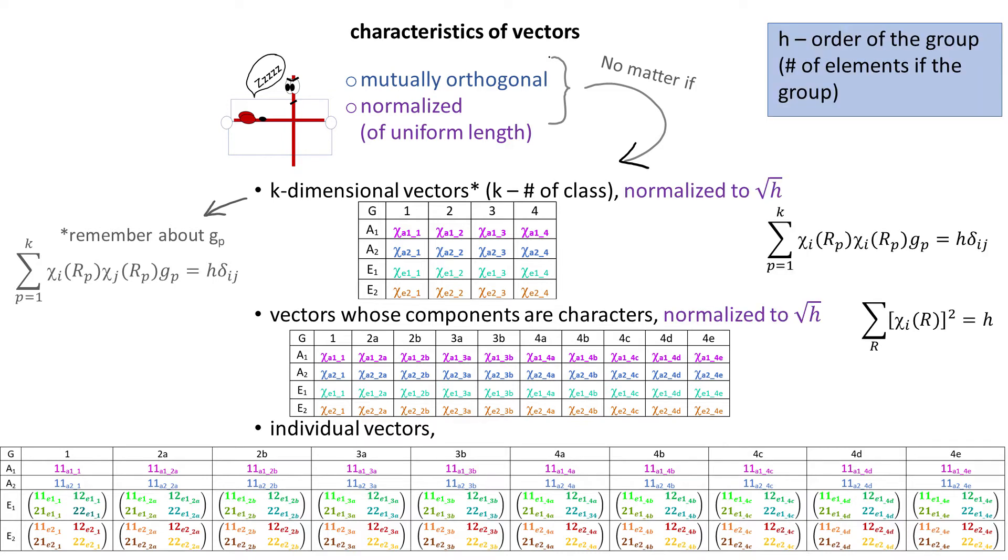Vectors whose components are characters are normalized to square root of h and the individual vectors in the EREPs are normalized to the square root of h over LI, LI being the dimension of an EREP.